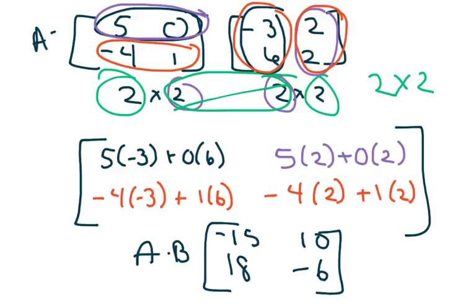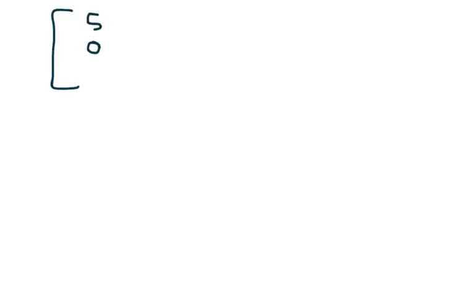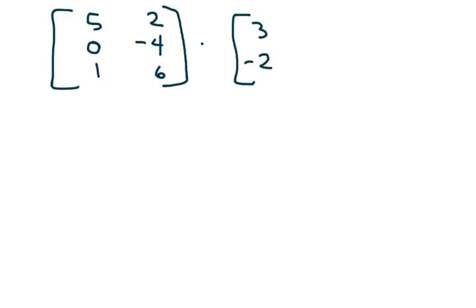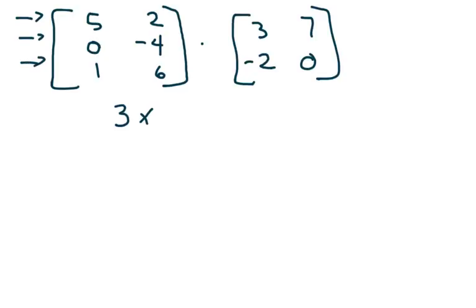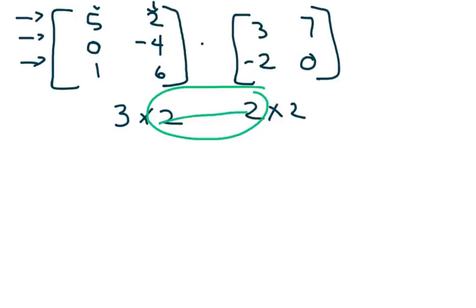That is matrix A times matrix B for that example. Now let's try another one: a 3×2 matrix [5, 0, 1; 2, negative 4, 6] times a 2×2 matrix [3, negative 2; 7, 0]. Let's check dimensions — 3 rows, 2 columns on the left; 2 by 2 on the right. Since the inner two dimensions match, we can multiply and we'll get a 3×2 result.